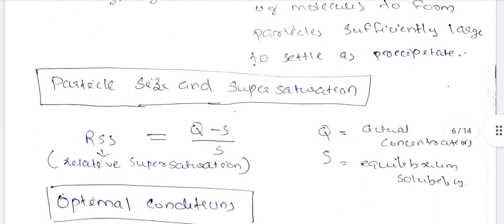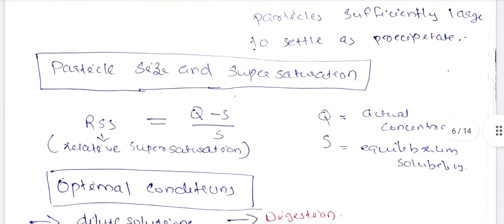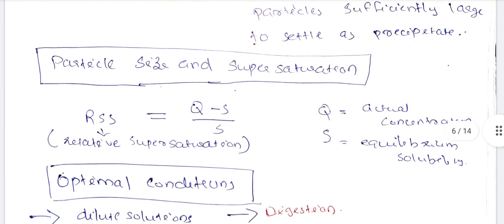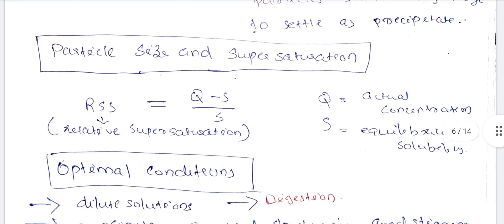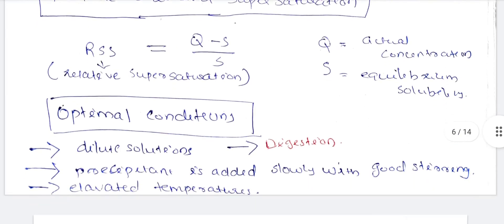The particle size depends on supersaturation. The equation is: RSS equals (Q minus S) divided by S, where RSS is relative supersaturation, Q is the actual concentration, and S is the equilibrium solubility.